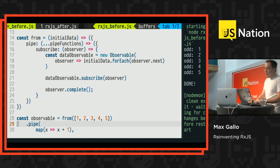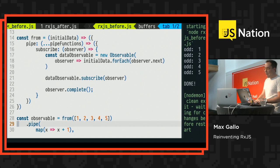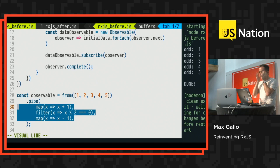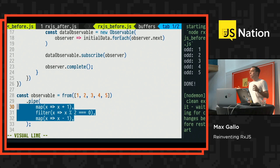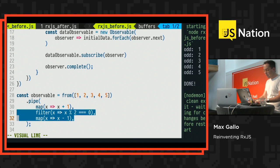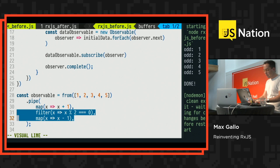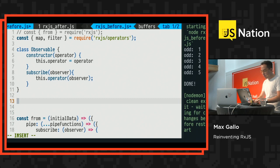Now the important bit: operators. These three — map, filter, and map — are interchangeable. In RxJS you have 50 to 60 different operators and you can combine them. The interface they use must be compatible so you can reposition them along the pipe. I want to start simple and create my own `map`.